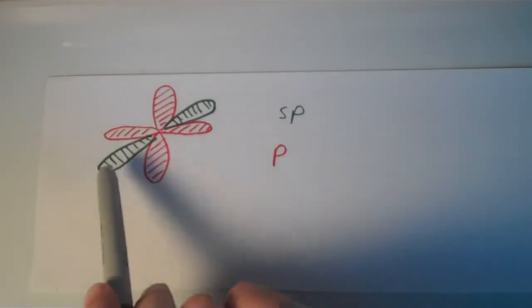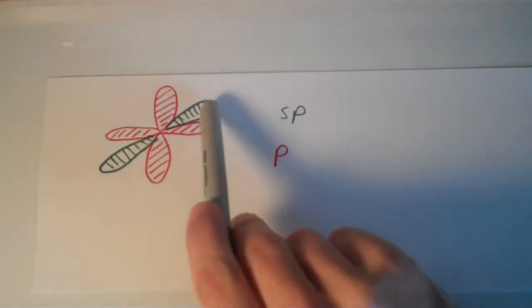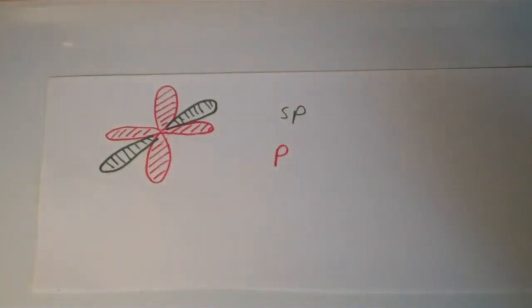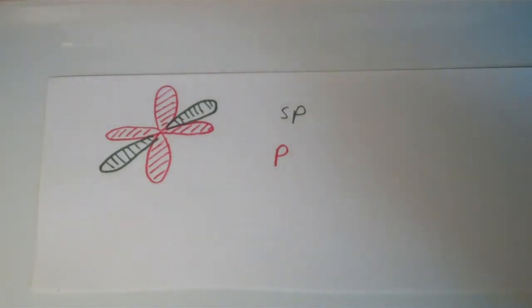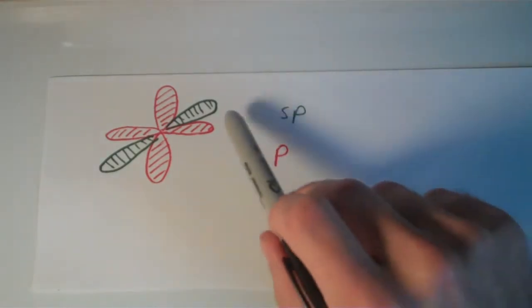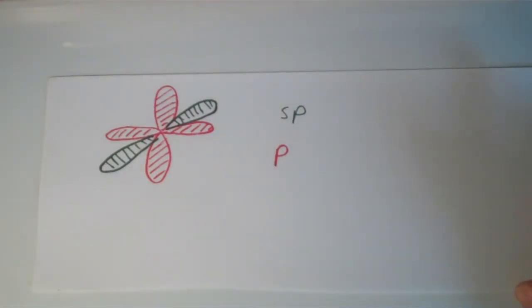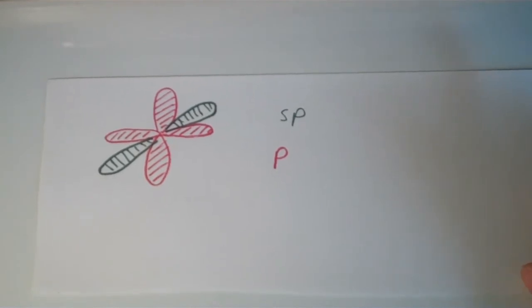The sp orbitals: this is one of the sp orbitals, and this is the other sp orbital. Each of these orbitals actually has another back lobe to it. You know how those hybrid orbitals tend to have a small back lobe on the other side of the nucleus. They're not shown in this picture because it would have been very difficult to draw.